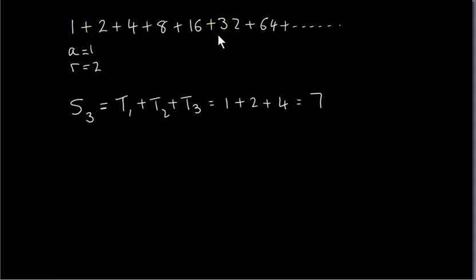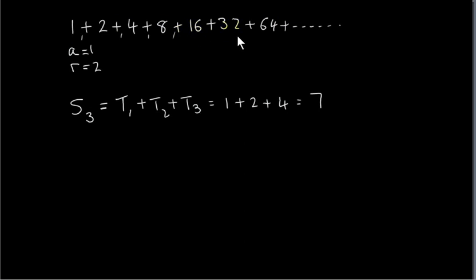Here's an example of a geometric series. A geometric series is got from a geometric sequence by just adding the terms. For a geometric series you would see commas, each term separated by commas. So we're just summing the terms when we're talking about a series.